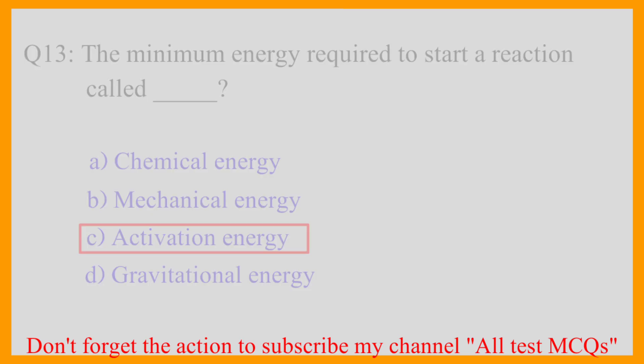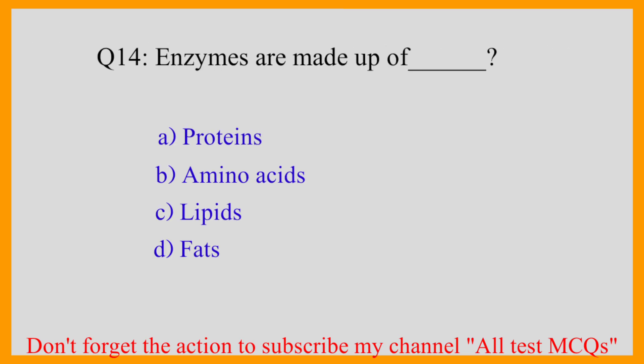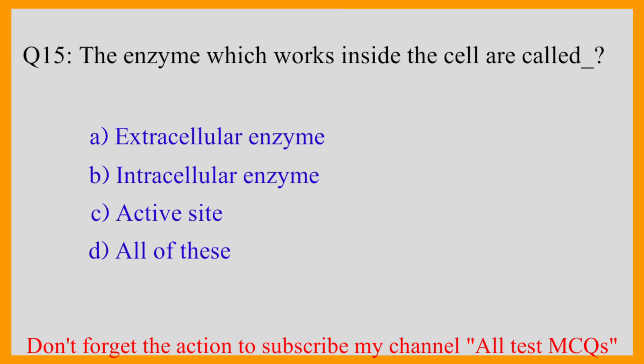Question number fourteen: Enzymes are made of — the correct answer is option B — amino acids. Question number fifteen: The enzymes which work inside the cell are called — the correct answer is option B — intracellular enzymes.